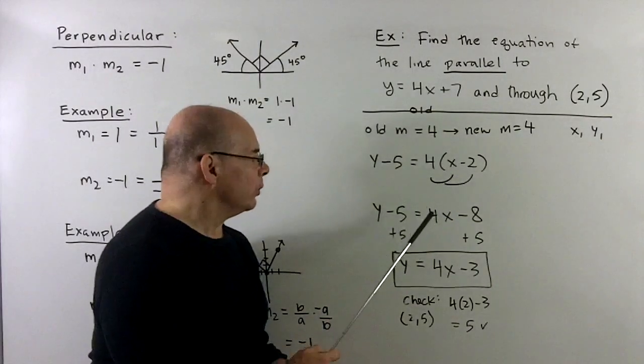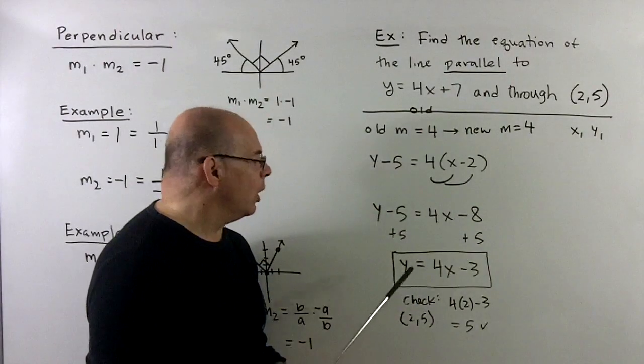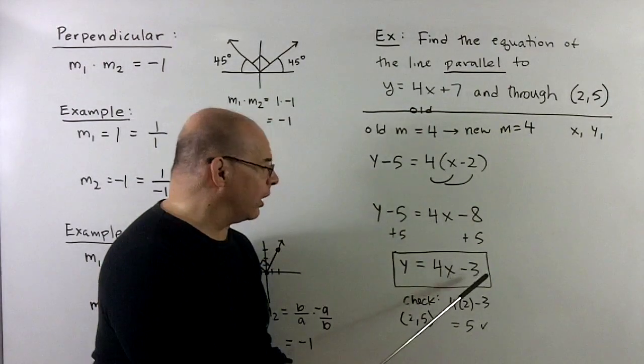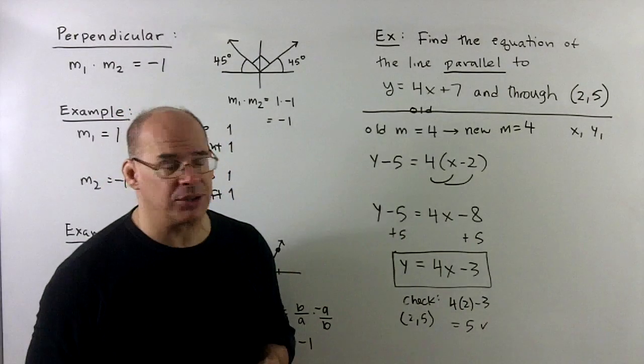We distribute. We get 4x minus 8. I add 5 to both sides to get to y equal to 4x minus 3. And then that's our answer. So, here we know the y-intercept is (0, -3).